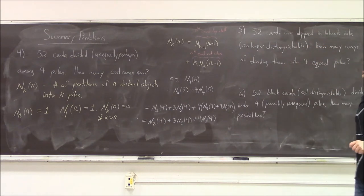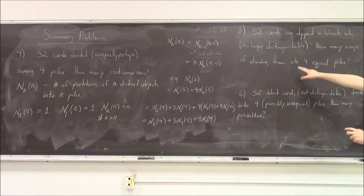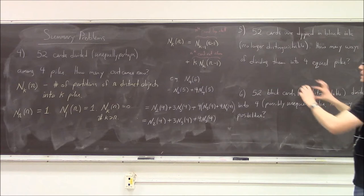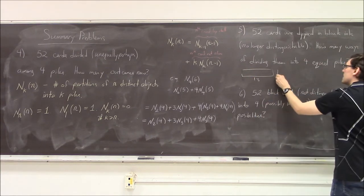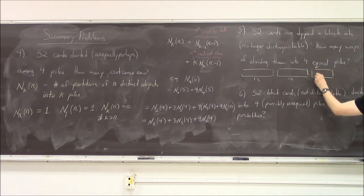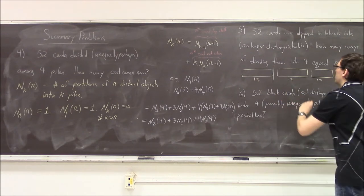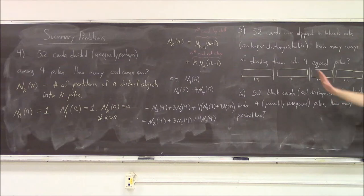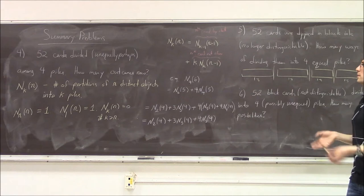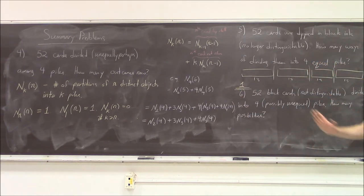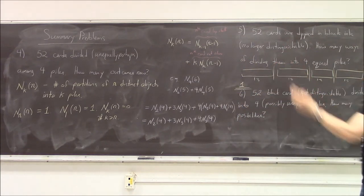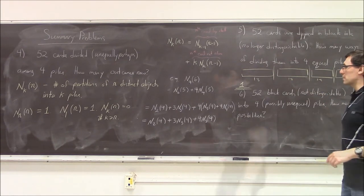In question 5, suppose we take all the cards and dip them in black ink, making them no longer distinguishable. How many ways are there to divide them into 4 equal piles? Since each pile must contain 13 indistinguishable cards, we simply count the first 13, make a break, count the next 13, and so on. There is clearly only one possibility.